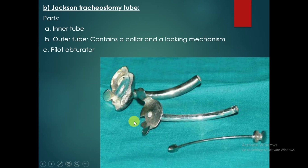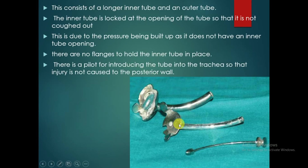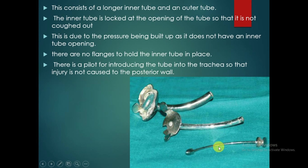Another type is the Jackson tracheostomy tube. Different parts of the Jackson tracheostomy tube: the outer tube contains a collar and a locking mechanism, and there is a pilot obturator. The inner tube is longer than the outer tube. The inner tube is locked at the opening of the tube so that it is not coughed out. There are also flanks to hold the inner tube in place, and a pilot for introducing the tube into the trachea to avoid injury to the tracheal wall. A lock system is used to lock the inner tube.